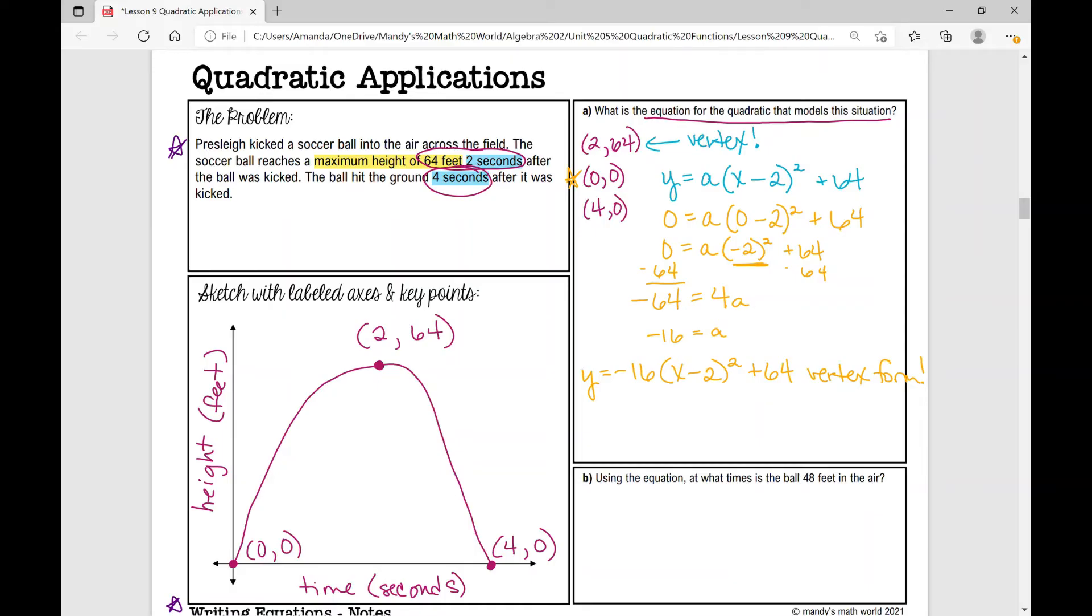You should get y equals negative 16x squared plus 64x. And that's in standard form. So if you wanted to practice converting from vertex form to standard form, this is the answer that you should get: negative 16x squared plus 64x.